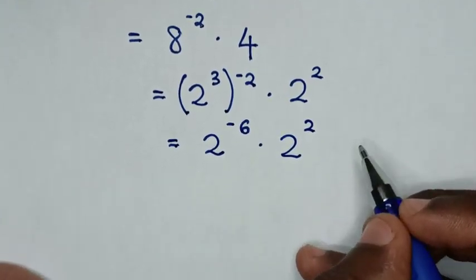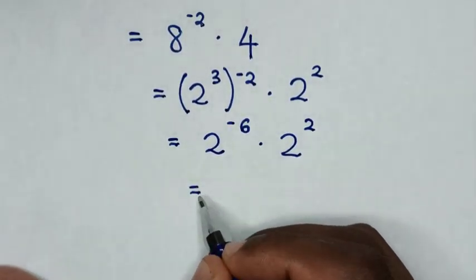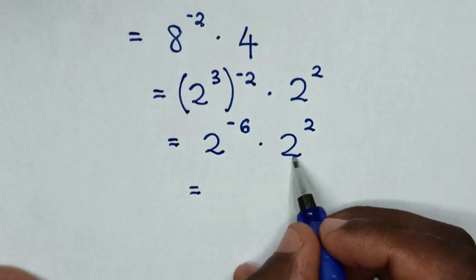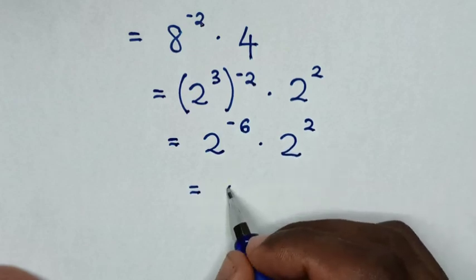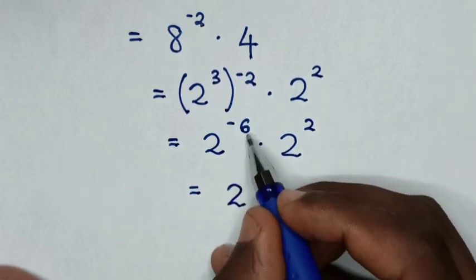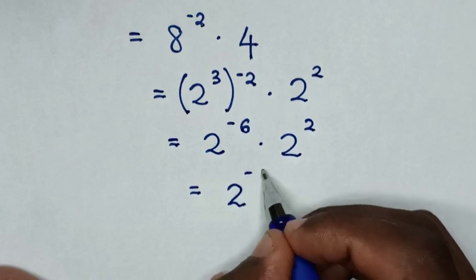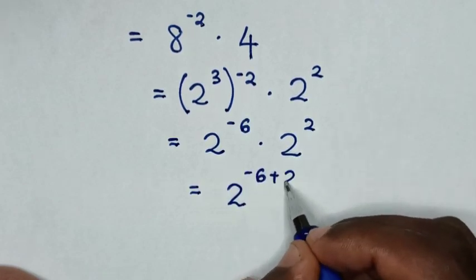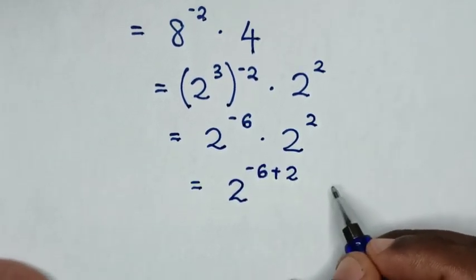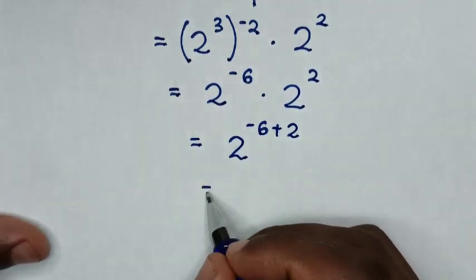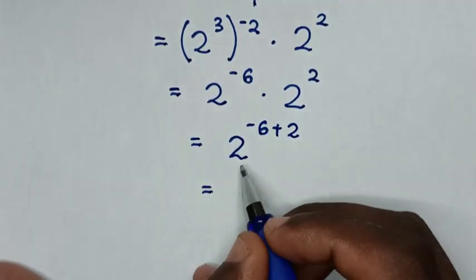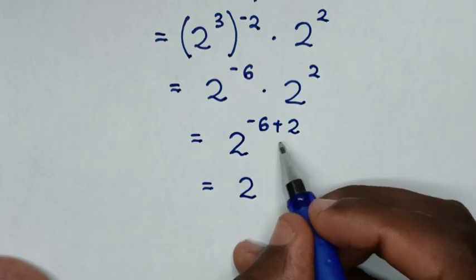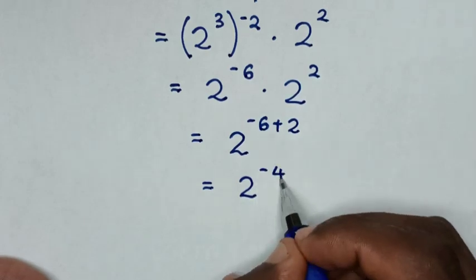In the next step, it will be equal to 2 power of 3 times negative 2, which is power of negative 6, then times 2 power of 2. Then, multiplying exponents with the same base, it will be 2 power of negative 6 plus 2, which gives 2 power of negative 4.